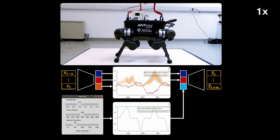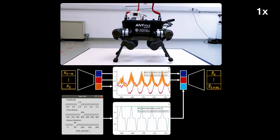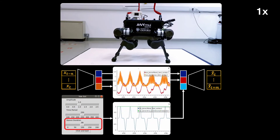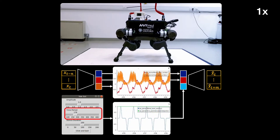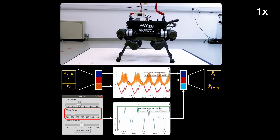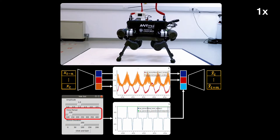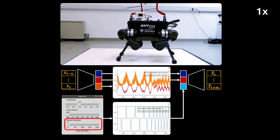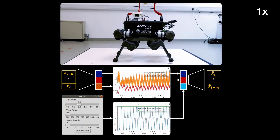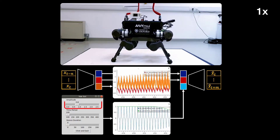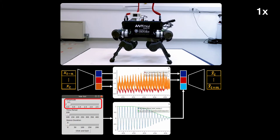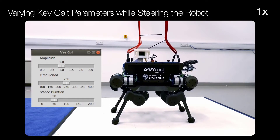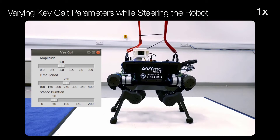Now we demonstrate continuous gait variation by modulating this signal. We now repeat the experiment showing the robot being steered whilst we alter the trot gait characteristics using the drive signal.